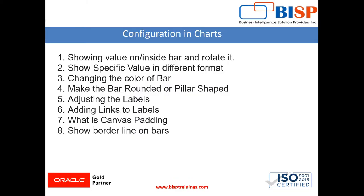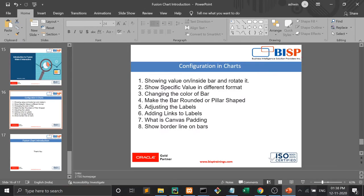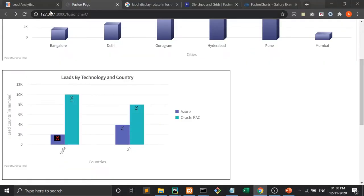Today we will cover these eight points: showing value in or outside the bar and rotate it, showing the specific value in different format, changing the color of the bar, making the bar rounded or pillar shaped, adjusting the labels, adding links to labels, what is canvas padding, and showing border lines. Let us see how it is done.